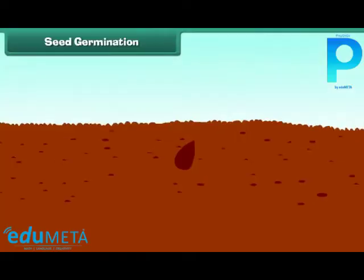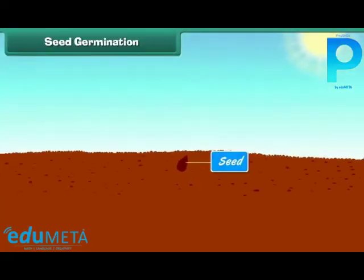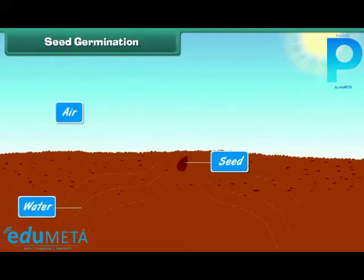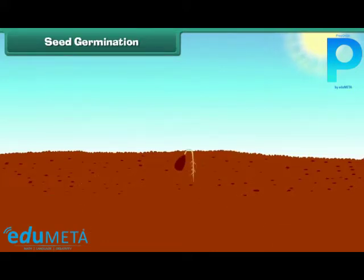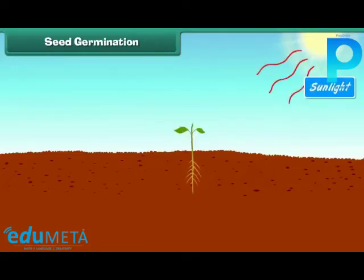Seed germination: Seeds start germinating in favourable conditions. Water, air, and warmth are required for a seed to germinate. When a seed absorbs water, it swells up and the seed coat becomes soft. The roots of the germinating plant appear first and grow towards the earth.